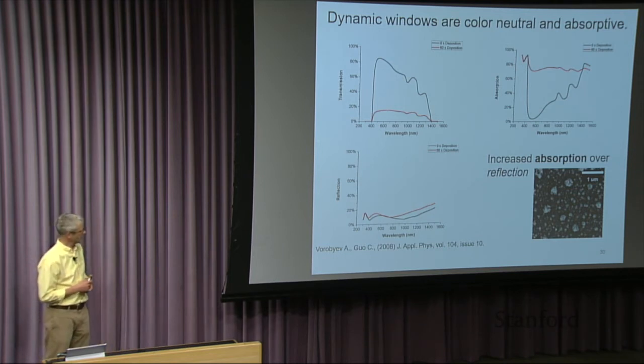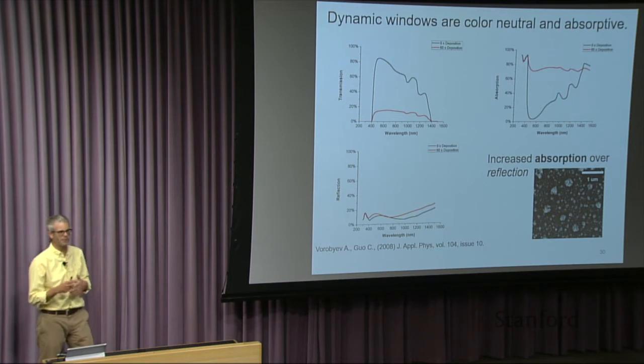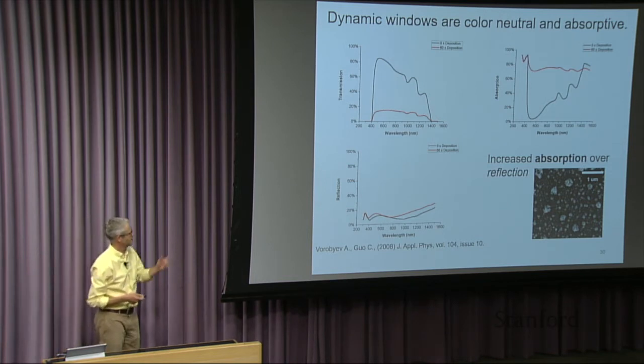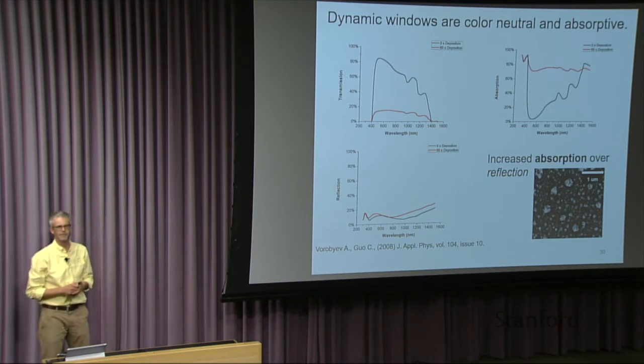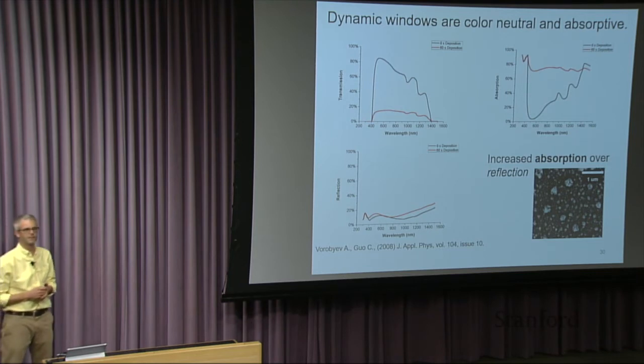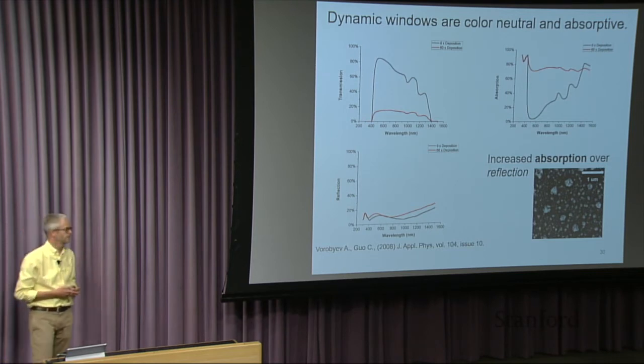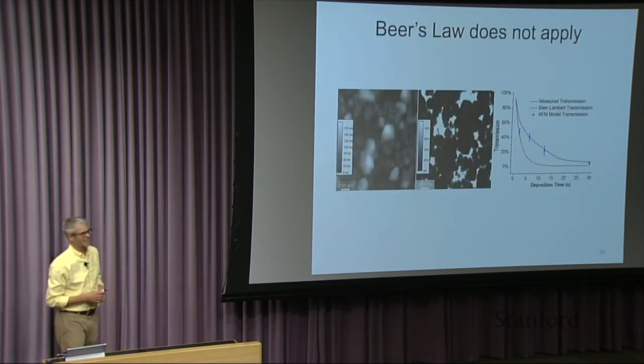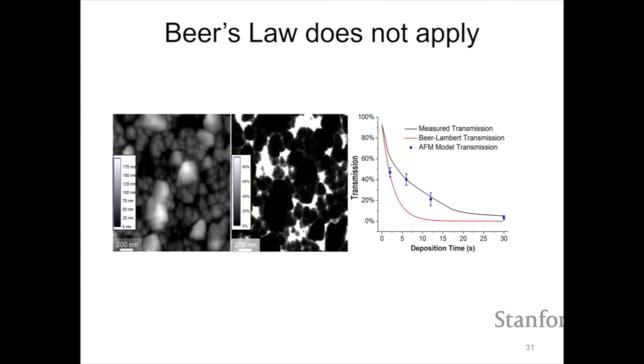And there are some people who have said, well, don't you want to reflect the light and keep the heat away? But it turns out that for most applications, there are some limits on how much reflectance. Like in Singapore, you're not allowed to reflect more than 30%. And so in a lot of ways, absorption is preferred.